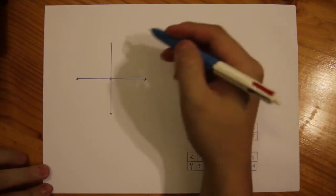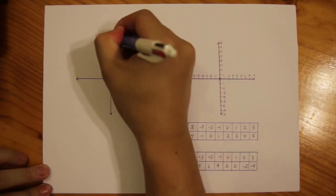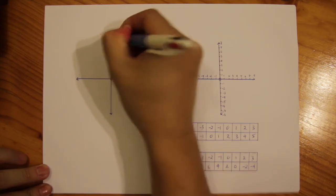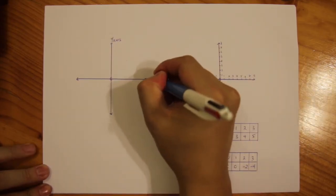Just recapping that we have a Cartesian plane here. This is your y-axis, the vertical line and the horizontal is your x-axis.